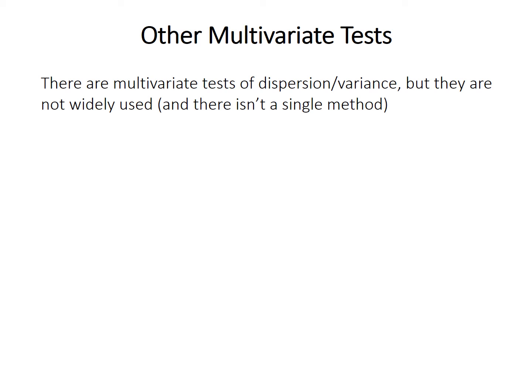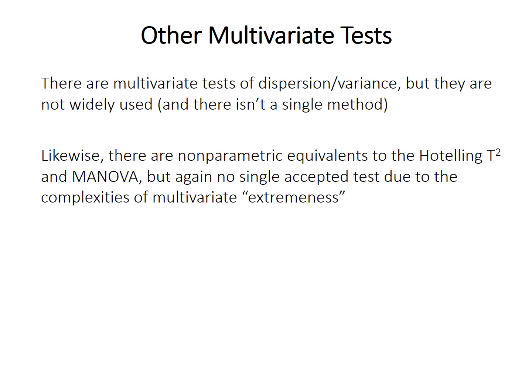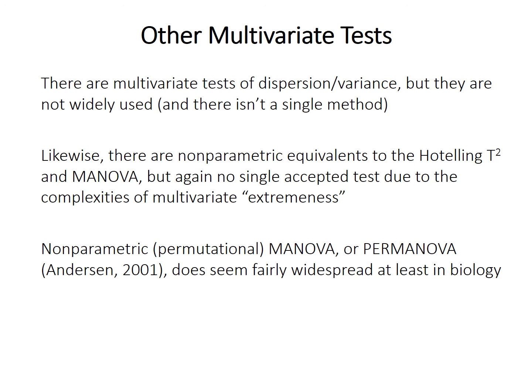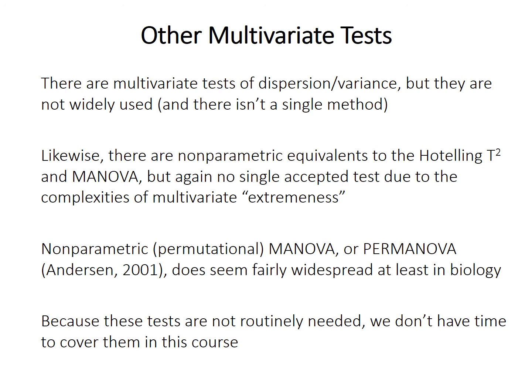We haven't covered tests for all possibilities — looking at the flowchart, a number of multivariate outcomes haven't been filled out yet. Many of these goals are quite esoteric and not widely used; there aren't many situations where you'd test for differences in dispersion for multivariate non-normal data. There are multivariate tests for dispersion and non-parametric equivalents for Hotelling T-squared and MANOVA, but there's no unique solution for multivariate extremeness. PERMANOVA — permutational MANOVA — is worth mentioning as an option for non-normal data; it's fairly widespread in the biological literature, but we won't cover these situations as they're more sophisticated than needed for 99% of data analysis.